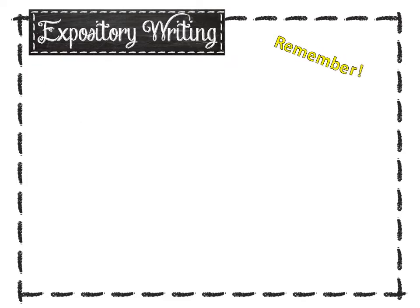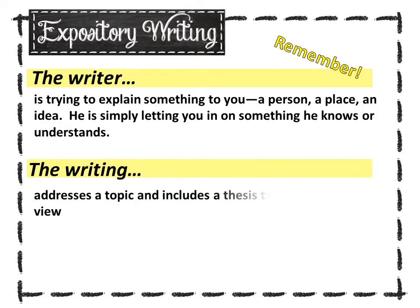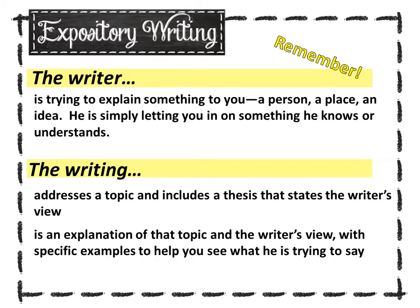Remember that in expository writing, the writer is trying to explain something to you — a person, a place, an idea. The writer is simply letting you in on something he knows or understands. The writing addresses a topic and includes a thesis that states the writer's view. The writing is an explanation of that topic and the writer's views, with specific examples to help you see what he is trying to say.